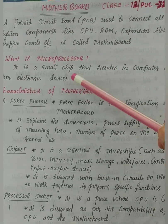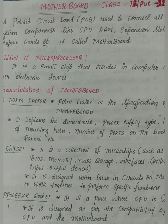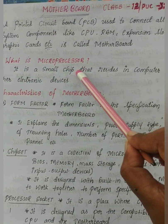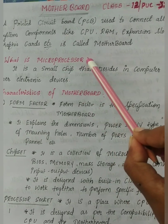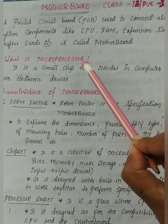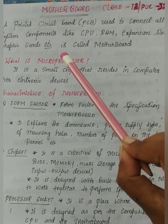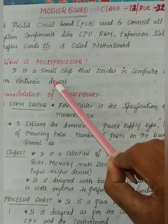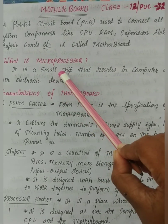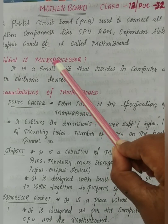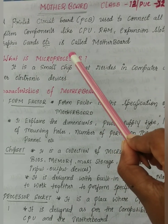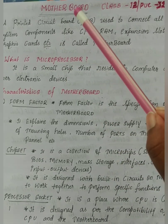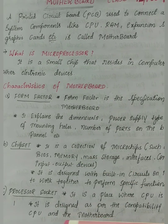Inside the motherboard, several chips, slots, and ports are present. Among these, some chips are very famous, the most important being the microprocessor. It is a small chip contained in the motherboard. The microprocessor is not only present in the motherboard but also in all different types of electric devices.